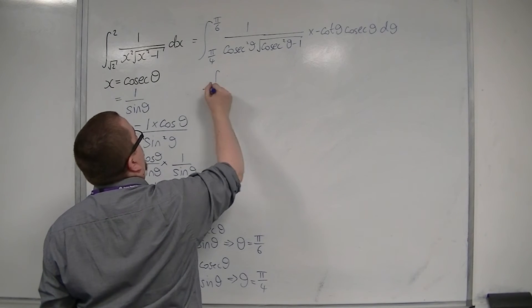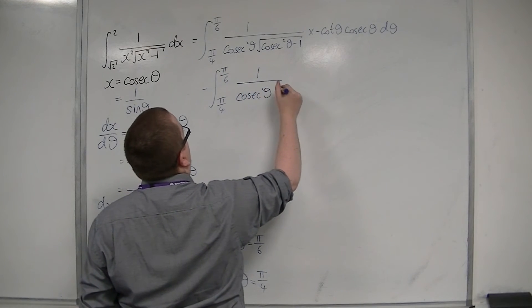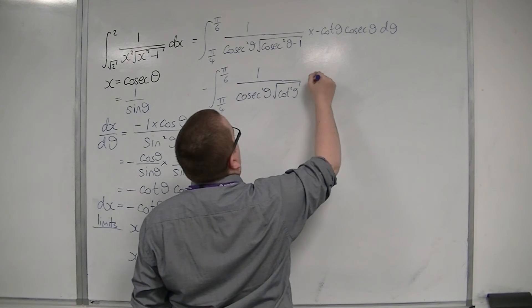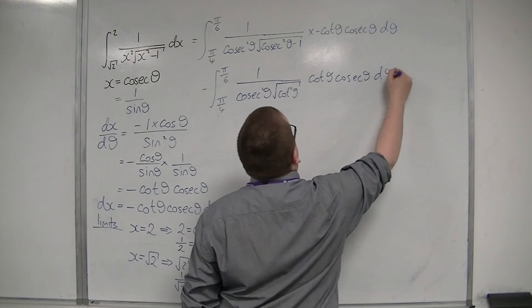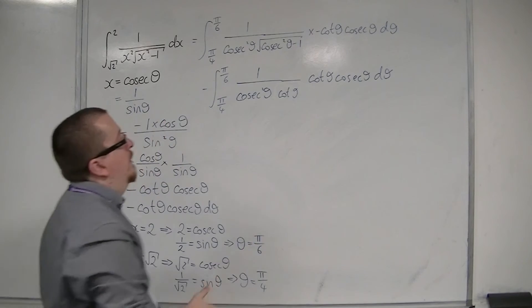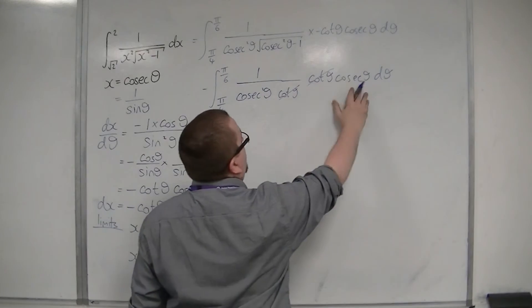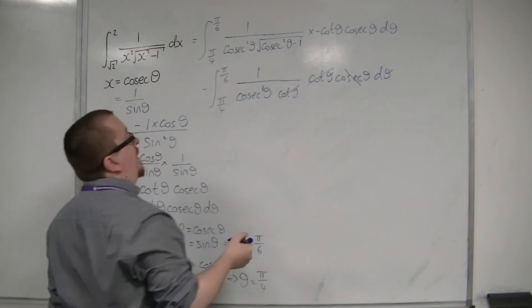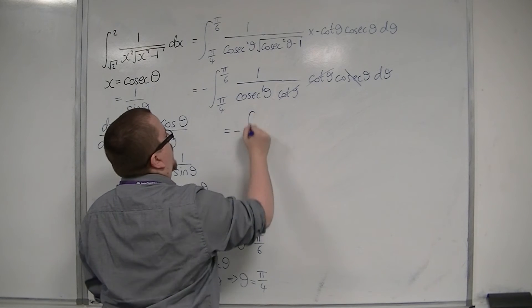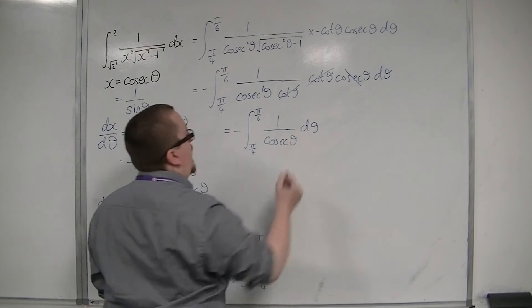Now I'm going to bring that minus sign out to the front. We've got 1 over cosec squared theta, square root of cot squared theta, times by cot theta, cosec theta, d theta. Now cot squared, square root of it, they cancel each other out. I've then got cot theta cancelling with that cot theta there. I've also got a cosec squared and a cosec, so that cosec cancels with one of the cosecs on the bottom of the fraction. So I've now got minus the integral between pi over 4 and pi over 6 of 1 over cosec theta d theta. You can see it has cancelled down.